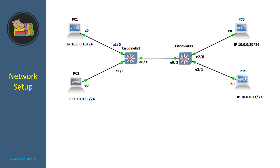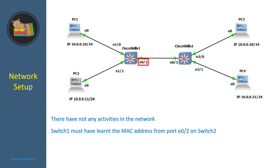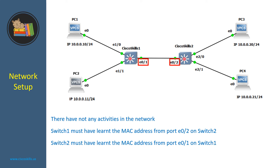From the content of the MAC address table in switch 1, we know the MAC address was learned from port Ethernet 0/1, so it must come from that portion of the network. Switch 1 must have learned the MAC address from port E0/2 on switch 2. Similarly, from switch 2's MAC address table, the MAC address is learned from port E0/2, so switch 2 must have learned it from port E0/1 on switch 1. Let's verify that.